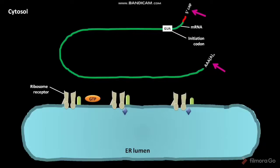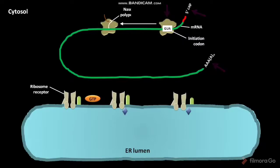First of all, the pre-ribosome starts the translation of the mRNA at the AUG sequence. After some time, the ribosome synthesizes a nascent polypeptide chain by using the mRNA and other translational components.